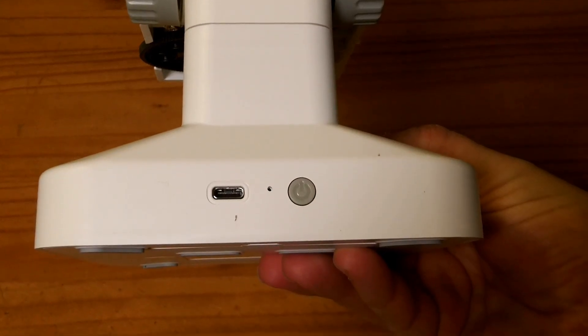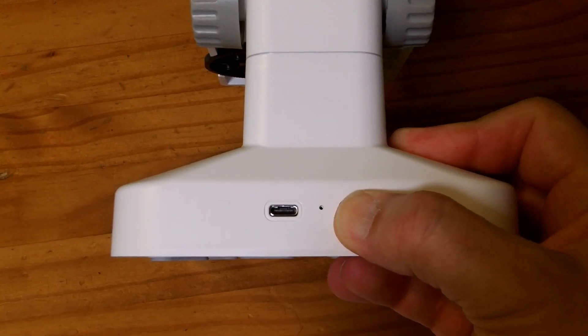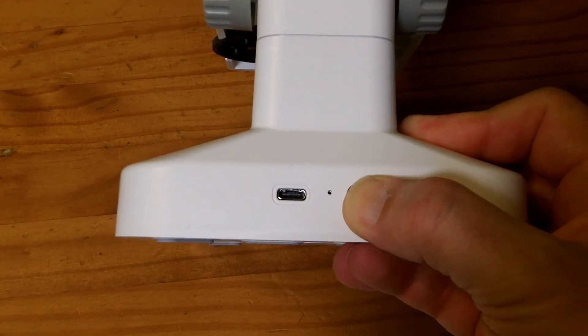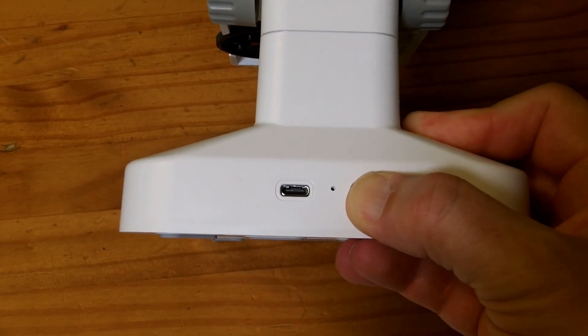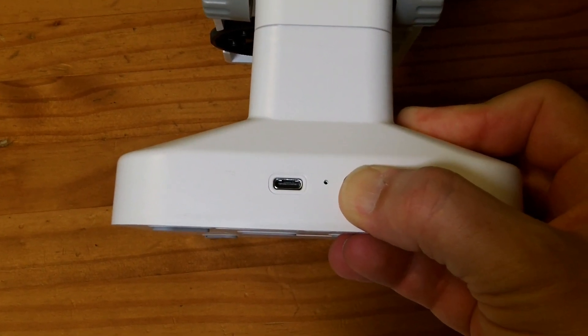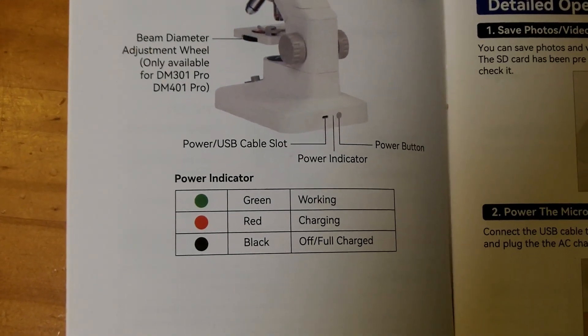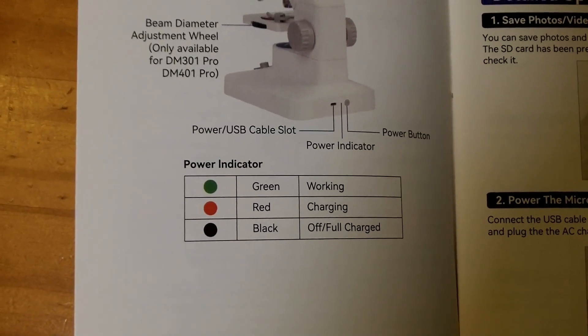It turns on and you just push this power button on the back. I've pushed and held the power button. Despite there being a rechargeable battery inside, it's not turning on. So it looks to me like the battery may be discharged. And it might be that the power switch got pushed on in shipping, but I'm going to plug it in. According to the manual, a green light means it's working. A red light means it's charging the battery. And if it's off, it means it's fully charged or just turned off.